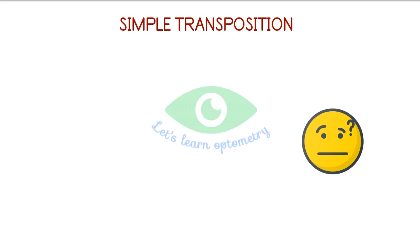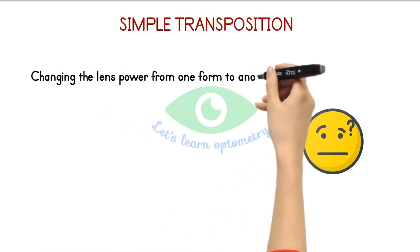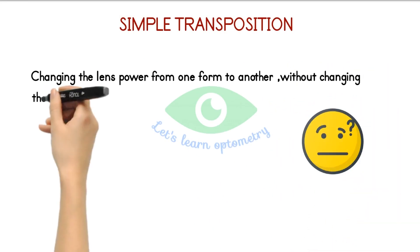What is simple transposition? It simply means changing the lens power from one form to another without changing the optical properties of the prescription.